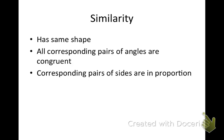So all corresponding pairs of angles are congruent, which means equal, and the corresponding pairs of sides are in proportion. So let's take a look at what this will look like.